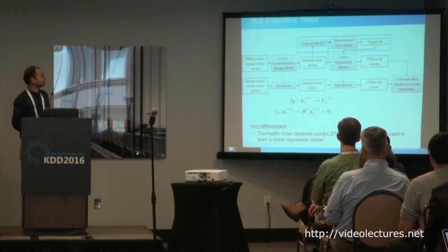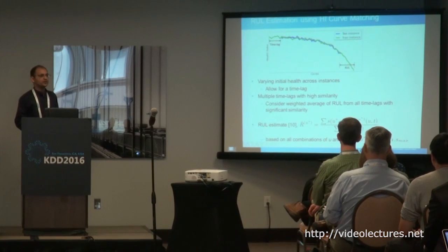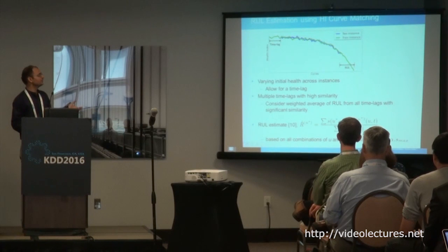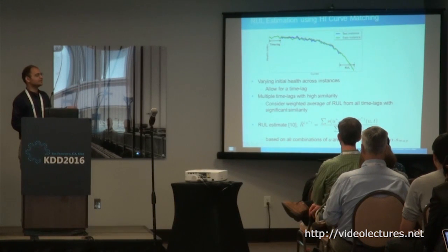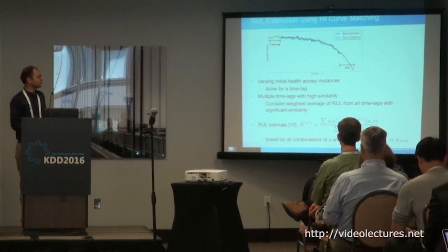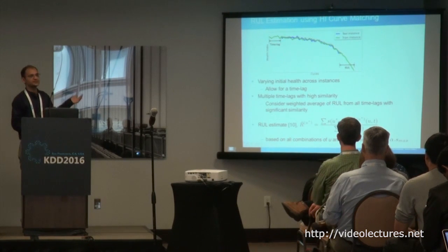We have proposed a target health index using the LSTM encoder-decoder. For RUL estimation, once we have the health index curves, for any test instance the health index curve is compared against a repository of offline health index curves. Wherever we find the best match, the remaining life of that training instance after that point is used as an estimate of the remaining useful life of the test instance. We use a weighted average of RUL estimates from each training instance, where the weight is proportional to the similarity of the test instance health index curve to a training instance health index curve.